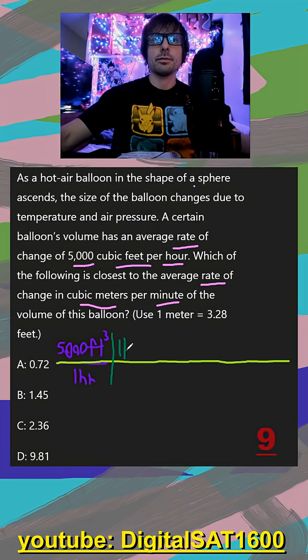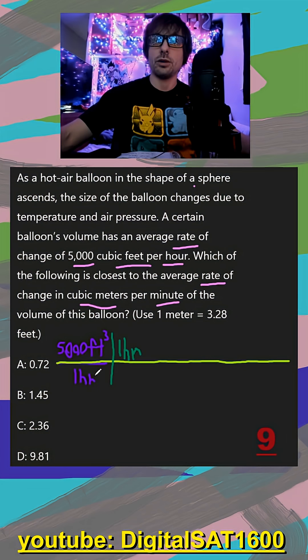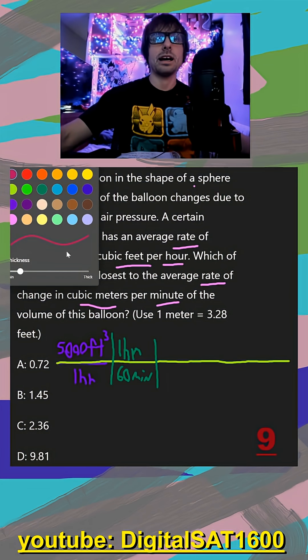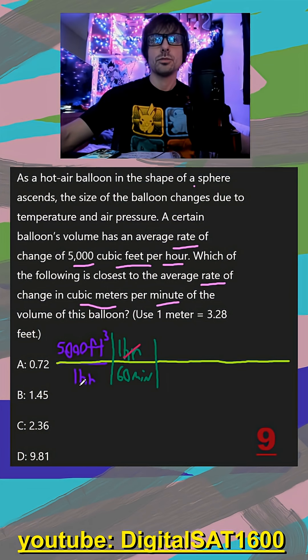So diagonally, I do one hour, because since this is a fraction, hours will divide by hours and it'll cancel out. And then vertically, what's equivalent to one hour that we want, and that's going to be 60 minutes. So already, just with one step, I've turned this from per hour to per minutes.